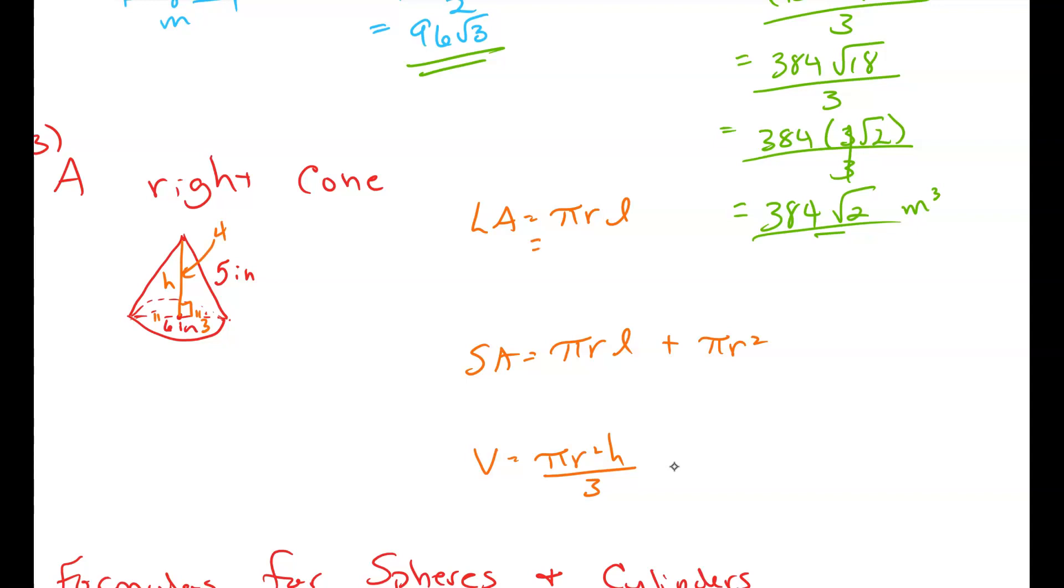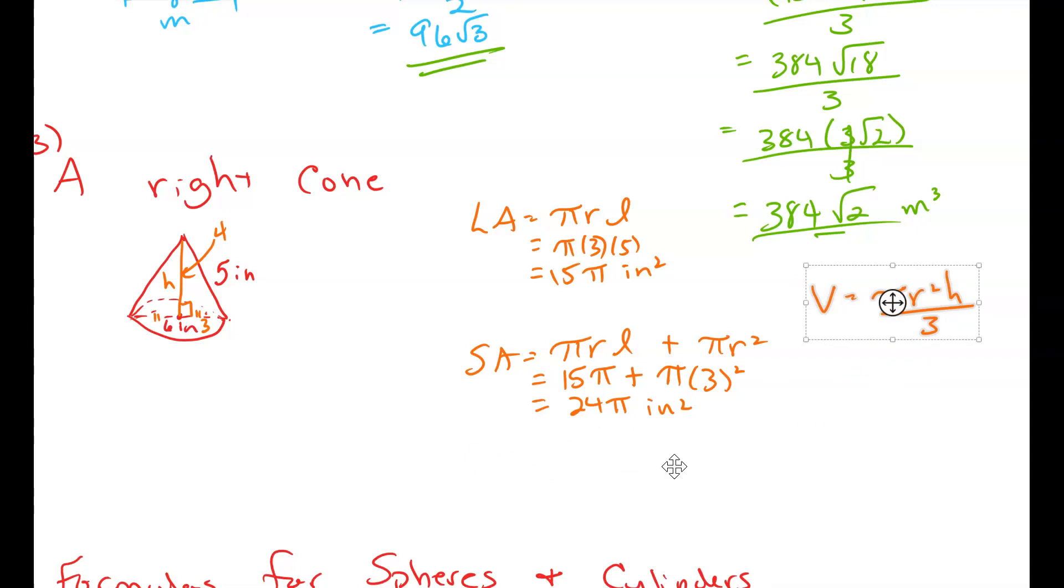And we're going to leave it in terms of pi, so in simplest form. So we got pi times 3 times 5. That gives me 15 pi square inches. And then we use that 15 pi, and we go plus. We got pi, our radius is 3 squared. So 15 pi plus 9 pi is going to be 24 pi squared inches.